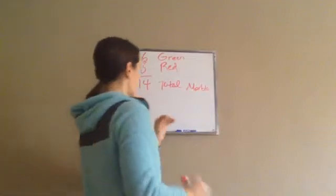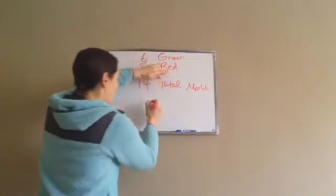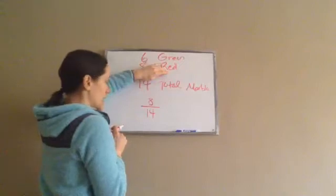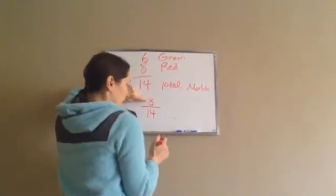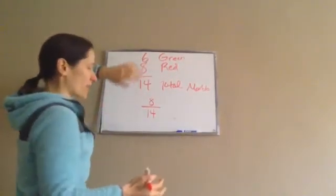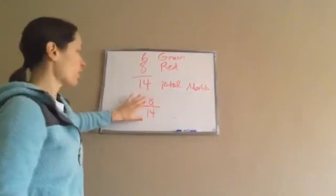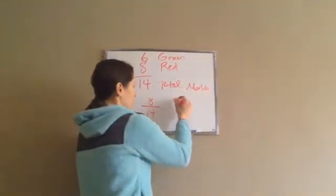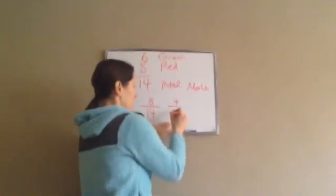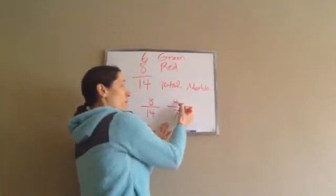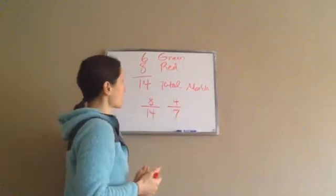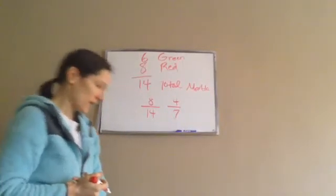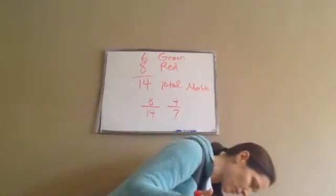What are the chances it will come up red? I have eight out of 14 chances that it will be red. You always want to reduce: two goes into eight four times, two goes into 14 seven times. So I have a four out of seven chance of getting red.